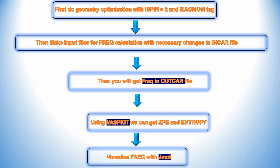Zero point energy and entropy are very important for calculating Gibbs free energy, whether you are doing CO2 reduction, N2 reduction, O2 reduction, or oxygen evolution reaction. You need to get the zero point energy and entropy of the adsorbed species — for CO that means CO, for N2 just nitrogen, and for O2 just O2. For each intermediate, get the corresponding zero point energy and entropy.